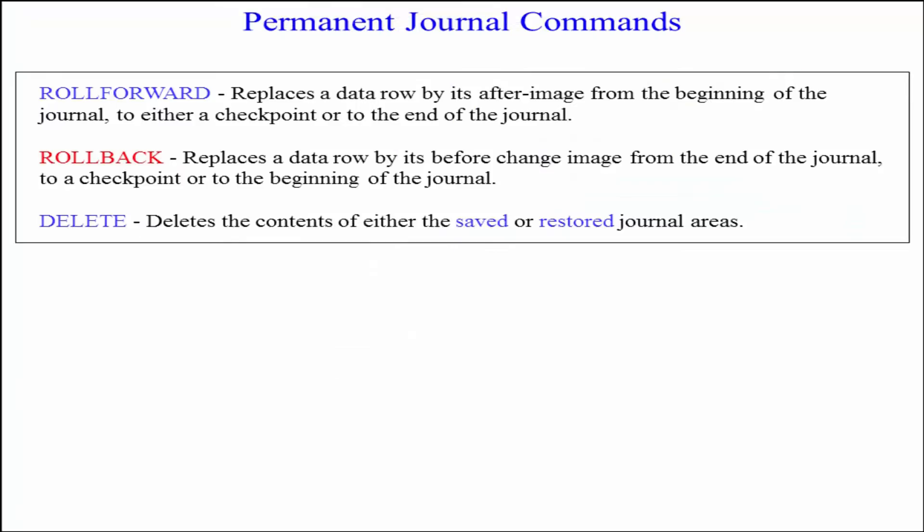Roll forward replaces a data row by its after image from the beginning of the journal to either a checkpoint or to the end of the journal. Roll back replaces the data row by its before journal image from the end of the journal to a checkpoint or to the beginning of that journal. Deletes deletes the contents of either the saved or restored journal areas.